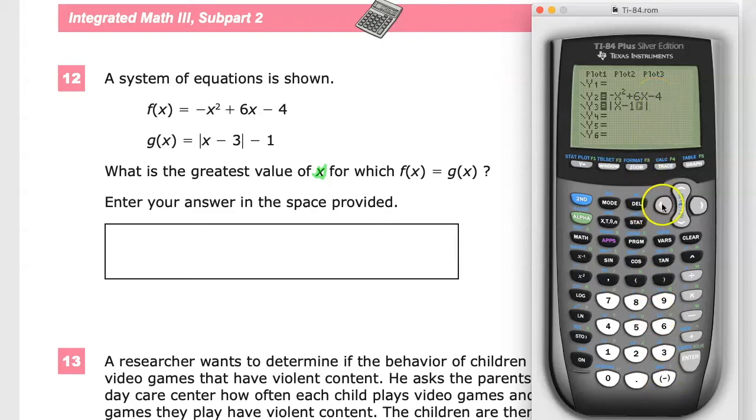I don't know why I typed in a one there when obviously I meant to type in a three. And then you sort of have to old Nintendo your way out of this with the directional pad. And then minus one. Now I'm going to graph.